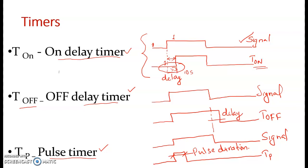That gap is the delay period. Then it will be switched on, and whenever it is switched off at point two, it will switch off instantly. There is no delay in switching off the timer. That is the concept of the on-delay timer.